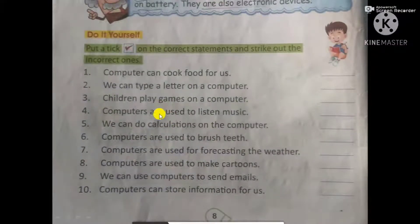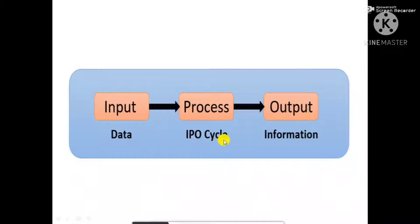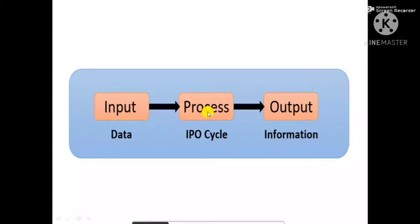These are all things you have studied in Class 1, so we are just doing revision. Now let's learn about the IPO cycle. I stands for Input, P stands for Process, and O stands for Output. All machines follow a cycle known as the Input-Process-Output cycle. What we give to a machine is called input, everything the machine does to the input is called process, and what we get from the machine is called output. Let us understand with examples.